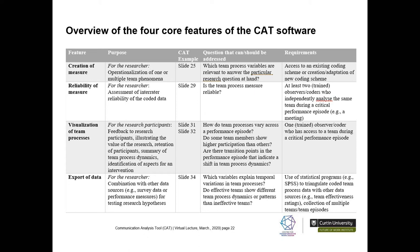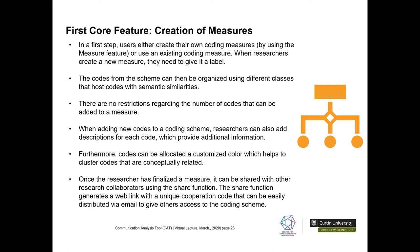I'll be using examples from my time coding the expert panel meetings to highlight each core feature. The first core feature is the creation of measures. Users either create their own coding measure using the measure feature, or use an existing coding measure shared by a collaborator. When researchers create a new measure, they need to give it a label — essentially a platform that hosts all of your codes and the data elicited from your observations.